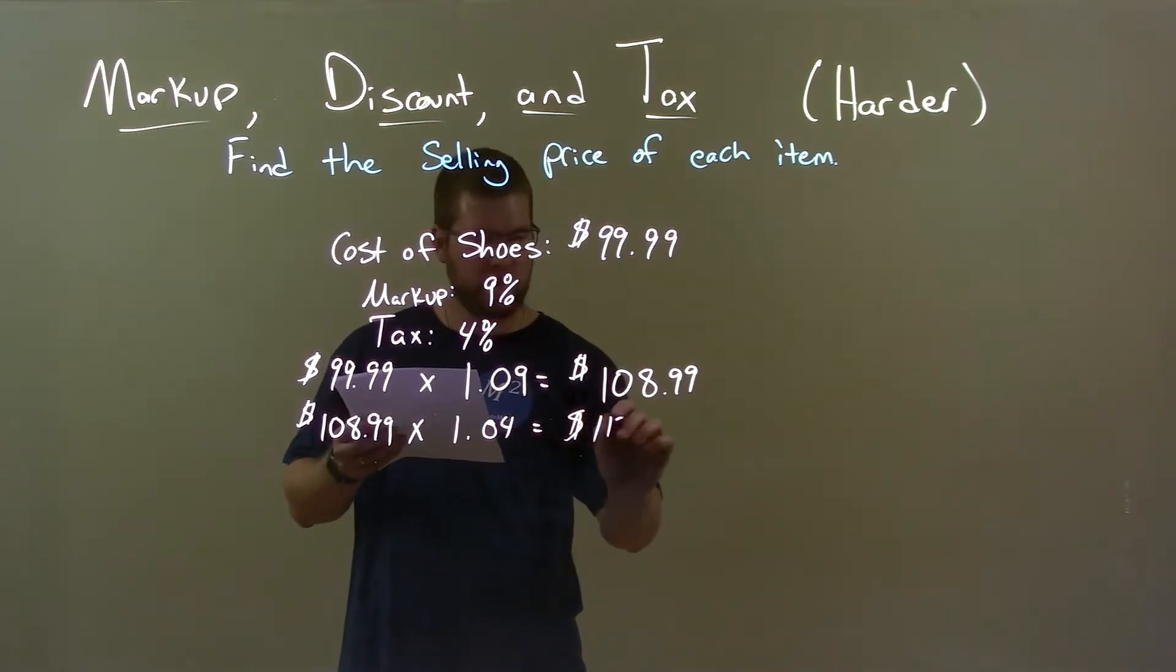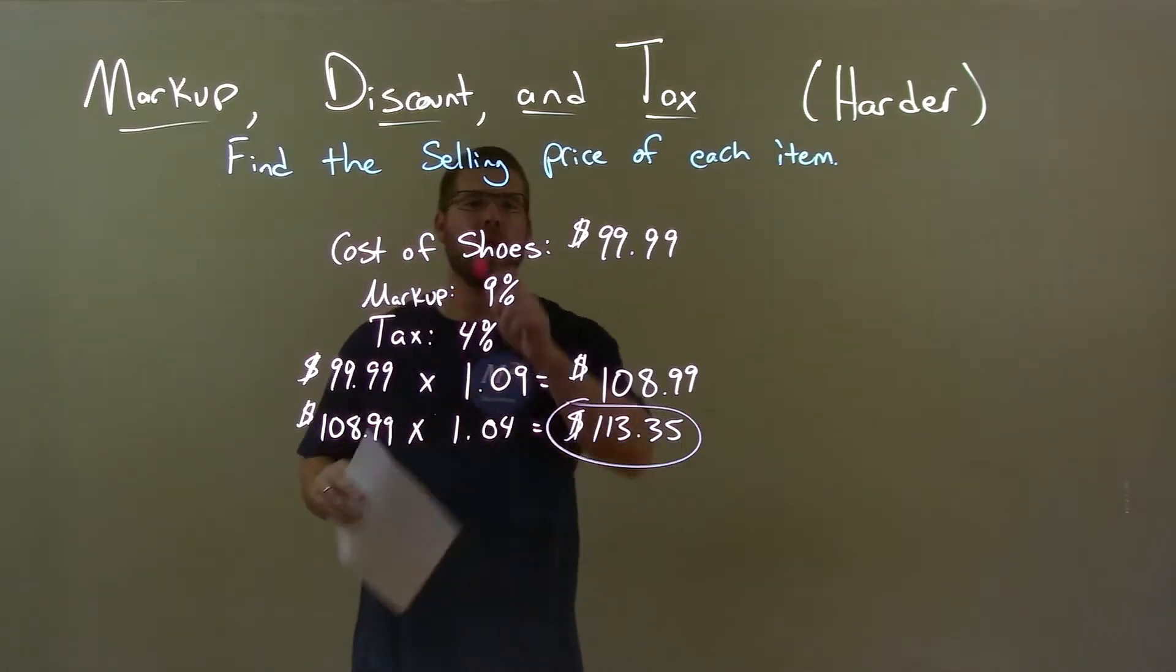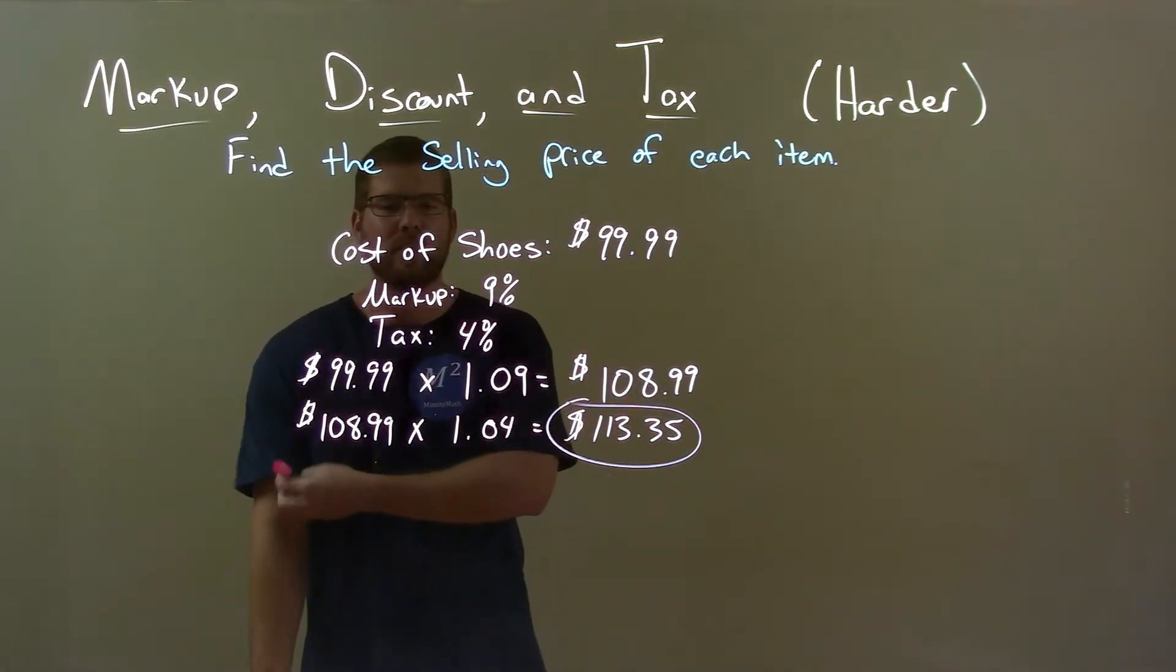Quick recap: we're given the cost of shoes at $99.99, a markup of 9%, and 4% tax.